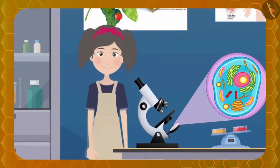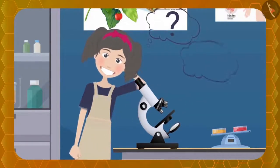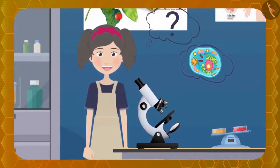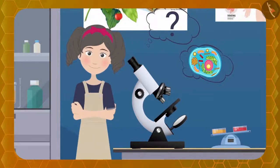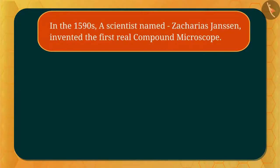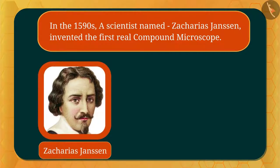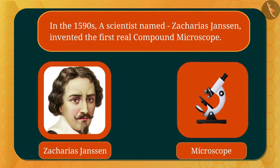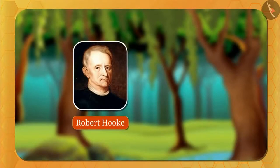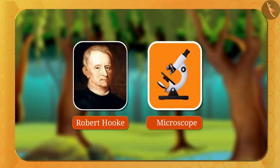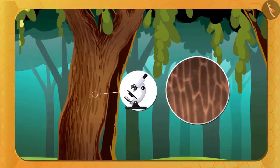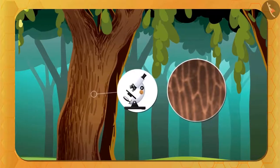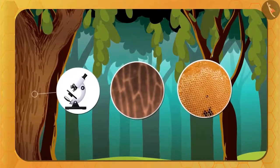A question must be arising in your mind — the cell which is so difficult to see, how difficult it must have been to find out about it. Let's see how the cell was discovered. In the 1590s, a scientist named Zacharias Janssen invented the first real compound microscope. Then, in 1665, a great biologist named Robert Hooke examined the bark of a tree under the compound microscope and found that the bark had many small cells whose structure was similar to a beehive.